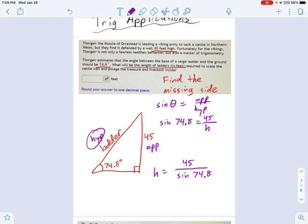Now I just rearrange my equation a little bit. h equals 45 divided by the sine of 74.8. When you divide by a trig function, you have to take the sine and the angle together. So now we just plug it into a calculator. 45 divided by the sine of 74.8. And I get h equals 46.631327.